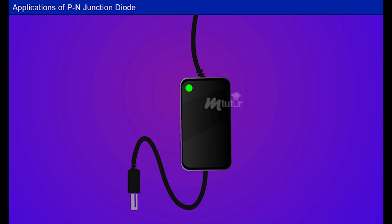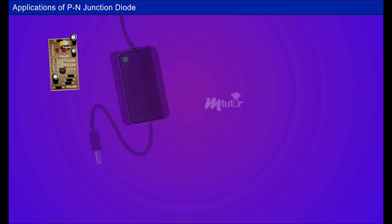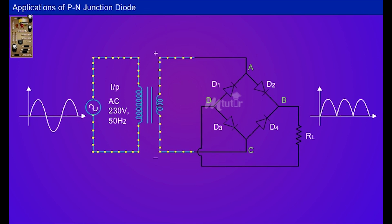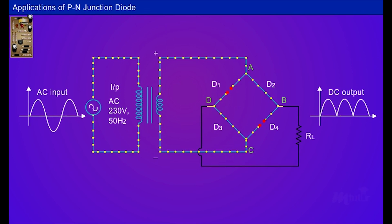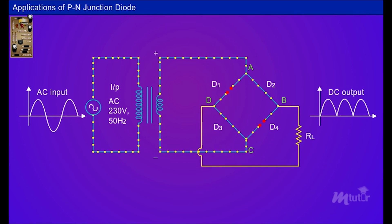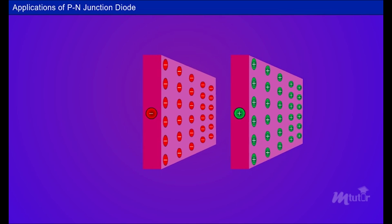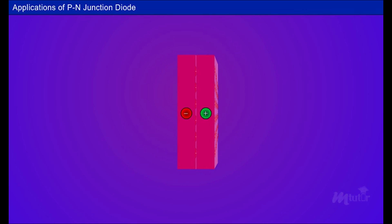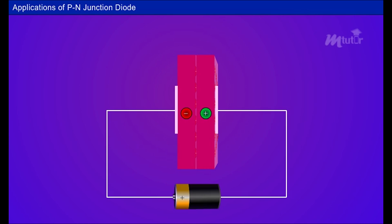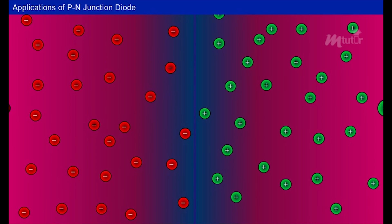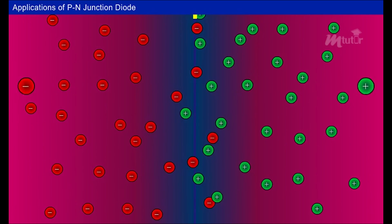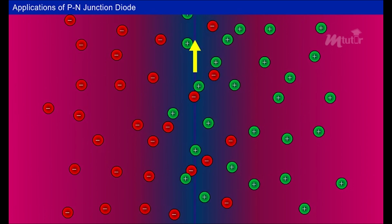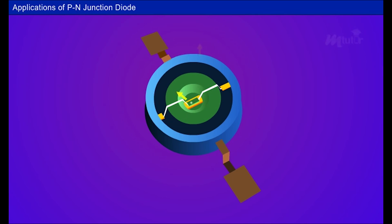Let's see applications of the P-N junction diode. In battery chargers, rectifier circuits use diodes to convert AC into DC voltage. P-N diodes are also used to manufacture light-emitting diodes. When voltage is applied to the diode, the electrons and holes combine, and during combining, the free electrons lose energy in the form of photons. The amount of photon release increases the color intensity.